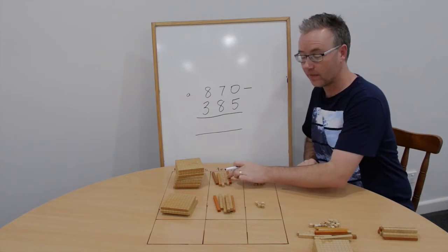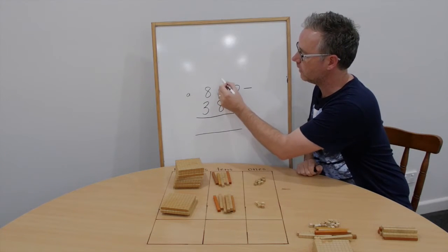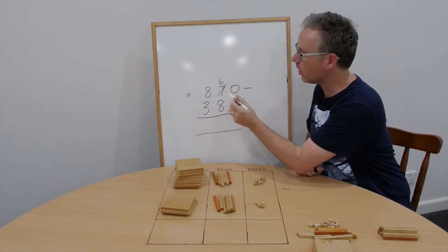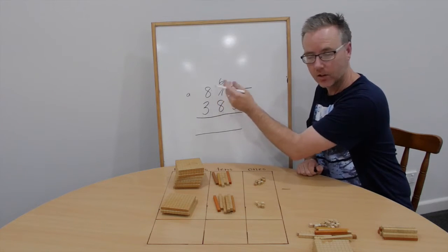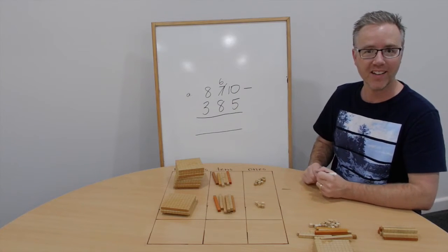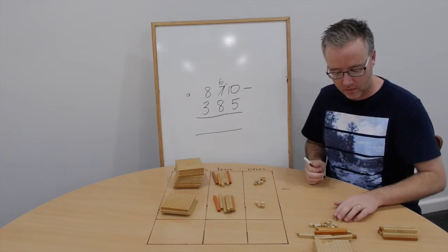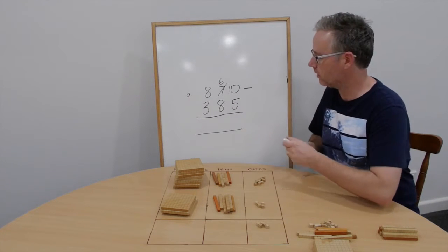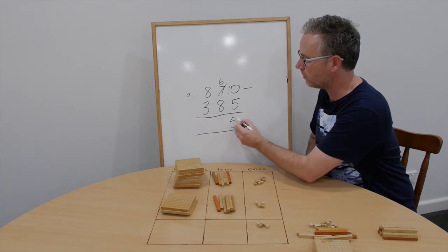So we now have 60, not 70. Cross it out, write on the top. We're going to bring that 10 that I took off and bring it over to the ones column. You can see here. So now we have 10 take away 5. 5. Write 5 in the ones column.